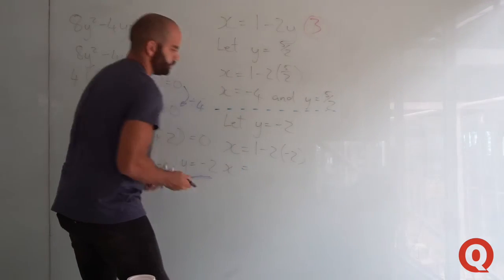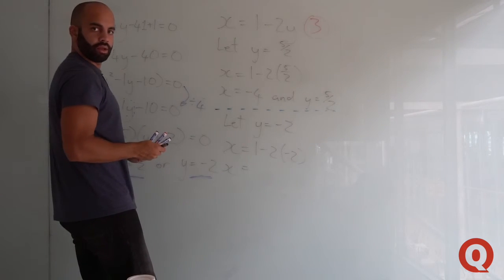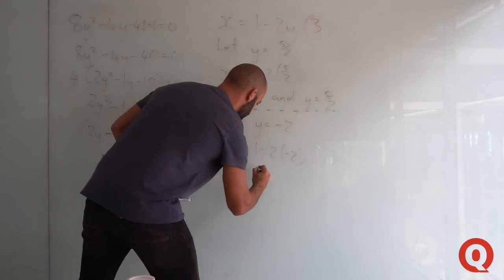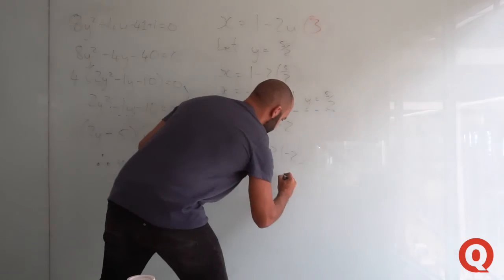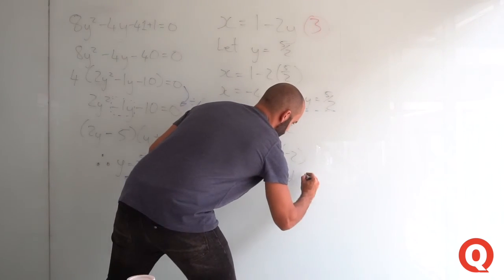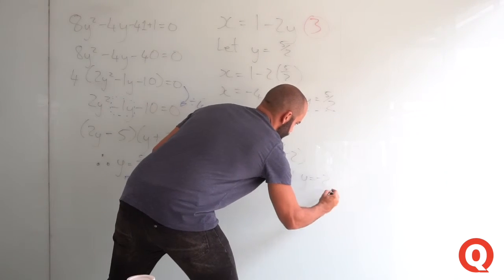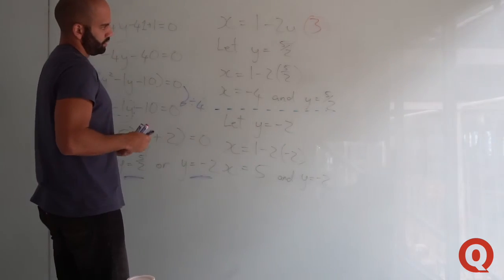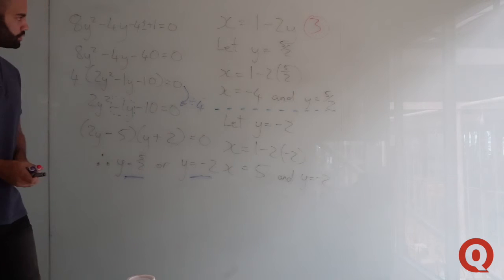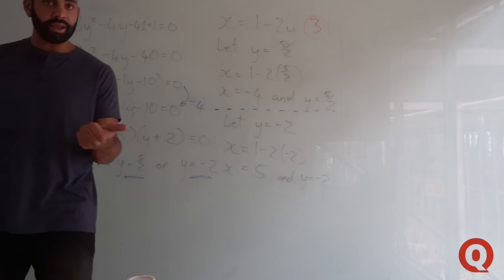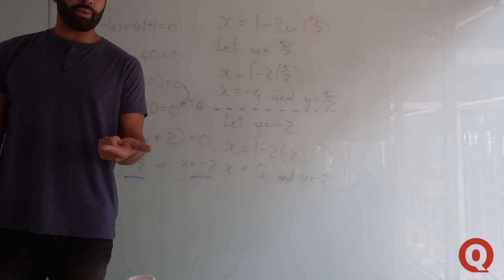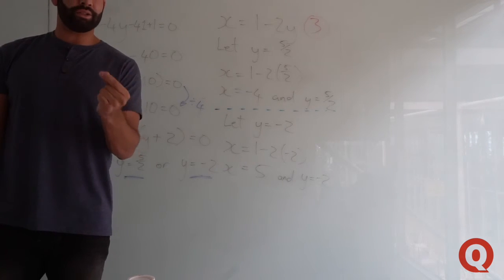x equals 5 and y equals minus 2. There you've solved it. You've solved your system of simultaneous equations—a linear equation and a quadratic equation, and you've managed to find the solution.